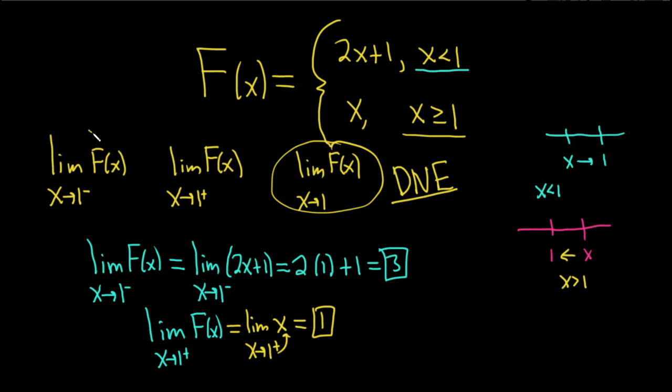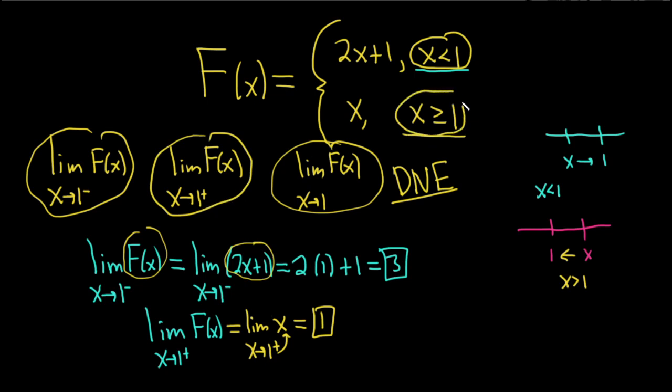So just a quick recap. When you're finding this one, you're approaching from the left, so x is smaller than 1, so you use this piece here and replace F of x with 2x plus 1. When you're finding this piece, you're approaching from the right, so x is bigger than 1, so you use this condition and replace F of x with x. For this last piece, you look at your answers. If the answers are the same, then the answer here is the same. If the answers are different, then you put D.N.E. I hope this video has been helpful to someone out there working on math. Good luck, thank you.